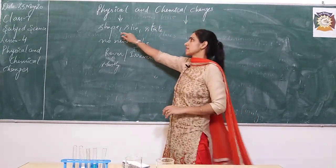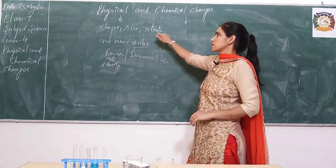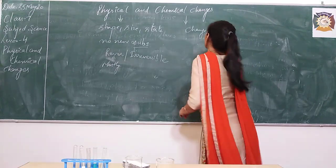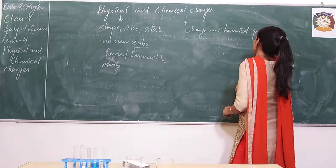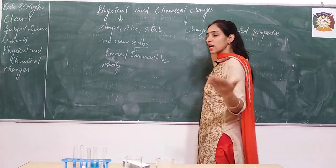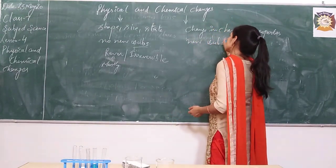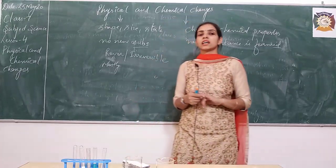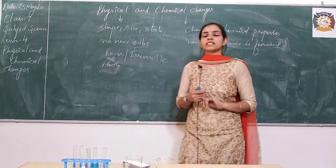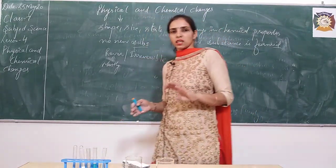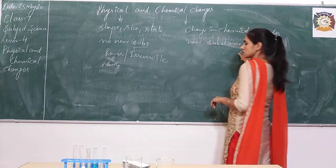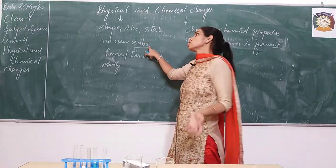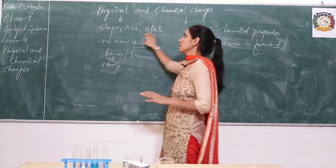In the case of physical change, there is a change in shape, size, or state. Here in chemical change, there is a change in chemical properties. Why? Because a new substance is formed. So in case of chemical change, always a new substance is formed. While in case of physical change, no new substance is formed. In physical change, there is only a change in physical properties, not in chemical properties.